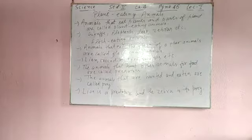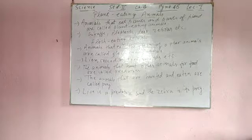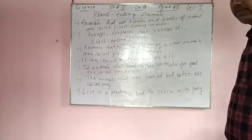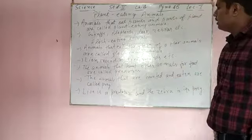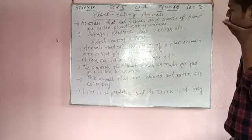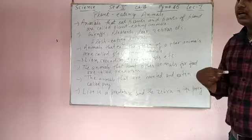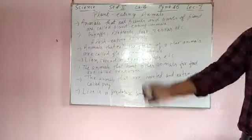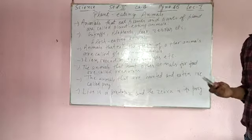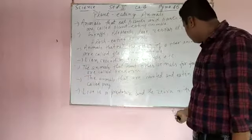Animals that eat plants and parts of plants are called plant-eating animals — like giraffe, deer, zebra, etc. Animals that eat the flesh of other animals are called flesh-eating animals — like crocodiles, tigers, snakes, etc. The animals that hunt other animals for food are called predators, and the animals that are hunted and eaten are called prey. So the lion is the predator and the zebra is its prey.